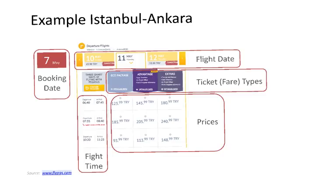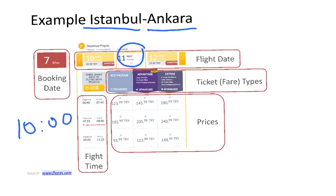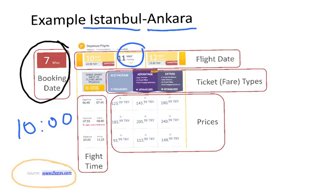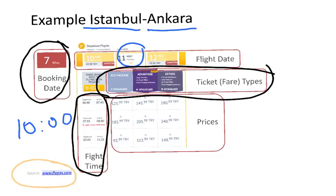This is a personal example. I live in Istanbul and on the 11th of May, I was going to have a meeting in Ankara at 10 o'clock. I went to the website of a low-cost airline from Turkey called Pegasus and checked availability and price. I knew about the meeting just four days before, and the website showed different flight times, different ticket types, and different prices.